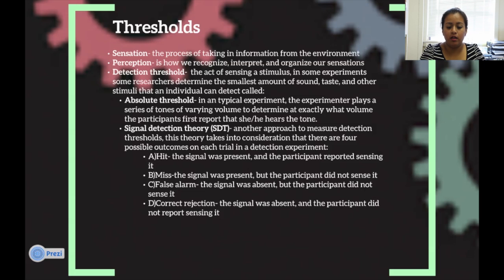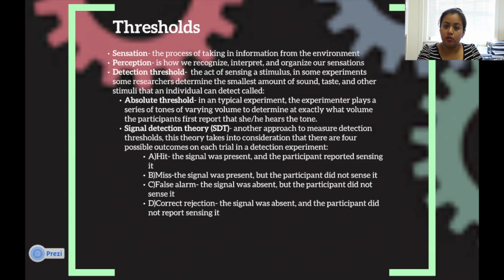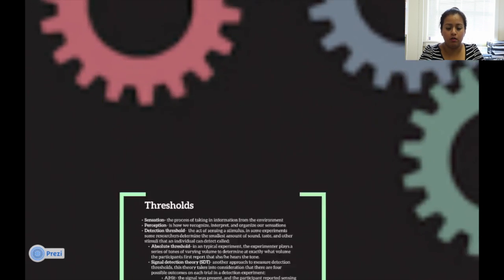Signal detection theory, or SDT, is another approach to measuring detection thresholds. This theory takes into consideration that there are four possible outcomes on each trial in a detection experiment. First is a hit: a signal was present and the participant reported hearing it. Second is a miss: the signal was present but the participant did not sense it. Third is a false alarm: the signal was absent but the participant did sense it. Fourth is a correct rejection: the signal was absent and the participant did not report sensing it.